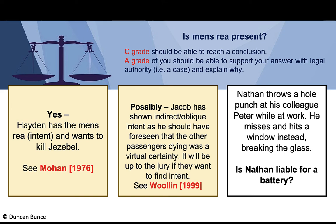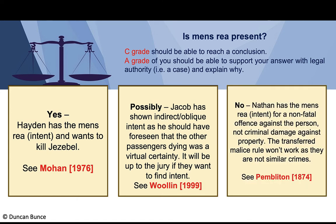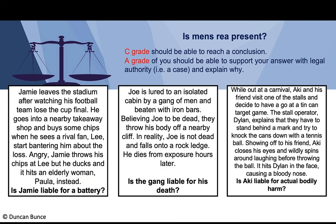Scenario three: Nathan throws a hole punch at his colleague Peter while at work, misses, and it hits a window, breaking the glass. Is Nathan liable for battery? No — Nathan has mens rea intent against another person, a non-fatal offence, but the consequential crime is criminal damage against property. The transferred malice rule won't work — the crimes are not similar. That is the limitation established in Pembleton.